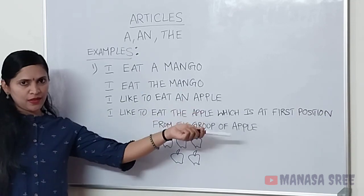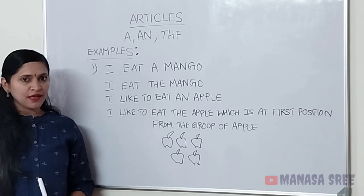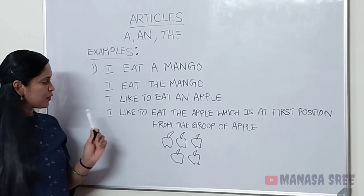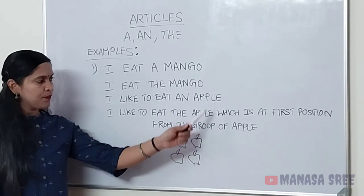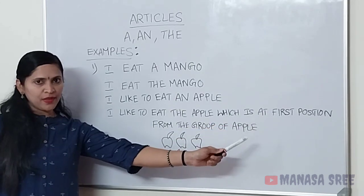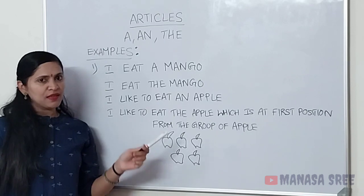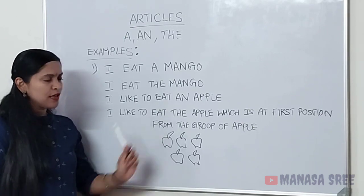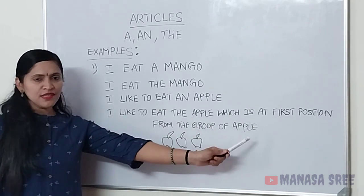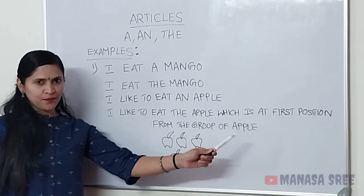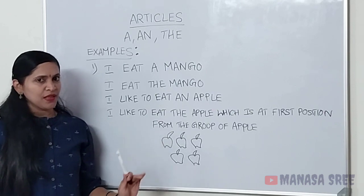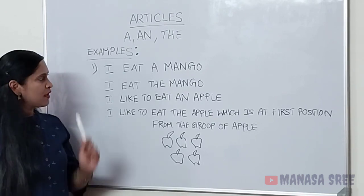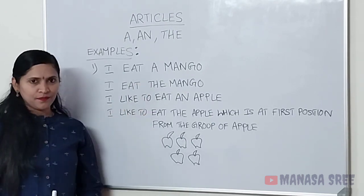I like to eat the apple — specific aagi. Nanna apple tintini aant the specific aagi hella vaaga. I like to eat the apple which is at first position from the group of apples. Group of apple alii first apple andre nang e ista — first apple tino dandre nang e ista aant the specific aagi hella vaaga, 'the' use maatthi vi. Ok na friends? So this is the usage of 'a' and 'the'.